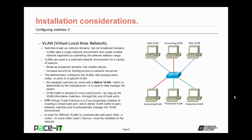One of the first things to consider is if there will be VLANs — virtual local area networks. While switches may break up collision domains, they do not break up broadcast domains, but VLANs will. A virtual local area network takes a single network environment and creates smaller network segments by subnetting the network address range, effectively breaking up the broadcast domains of that network.